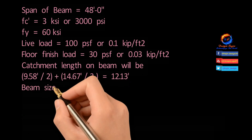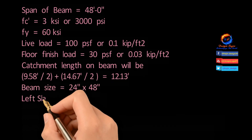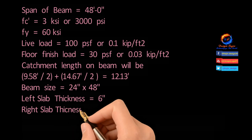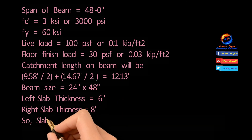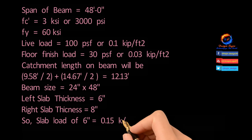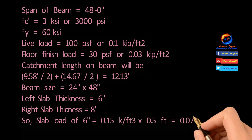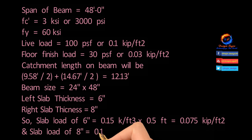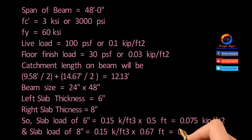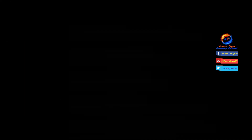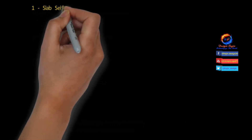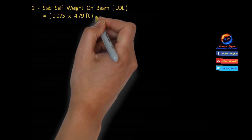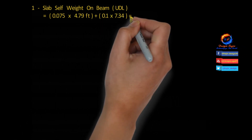Catchment length increases as there is now a right side slab span increase having 8-inch thickness. I am increasing beam size to 24 inch by 48 inch. The method is similar to calculating slab self-weight, floor finish load, and live load on beam; just the catchment length on beam increases, resulting in more load on beam.